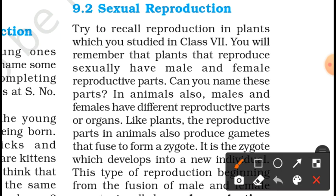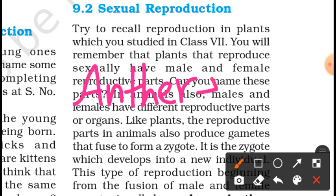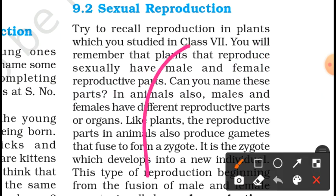Try to recall reproduction in plants which you studied in Class 7. Plants that reproduce sexually have male and female reproductive parts. You will know that plants have male and female parts. The male reproductive part in a flower is called the stamen, which contains the anther and filament. Pollen grains develop in the anther.